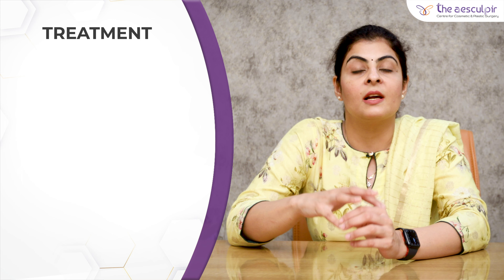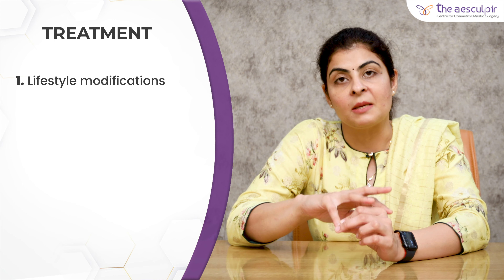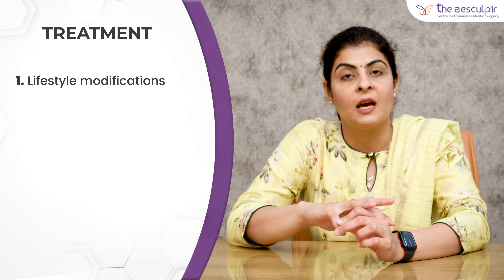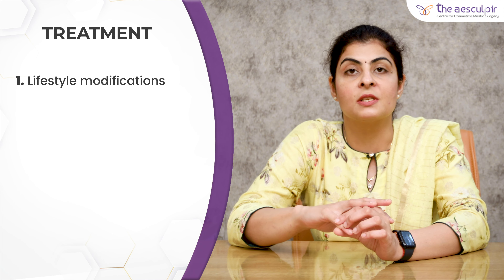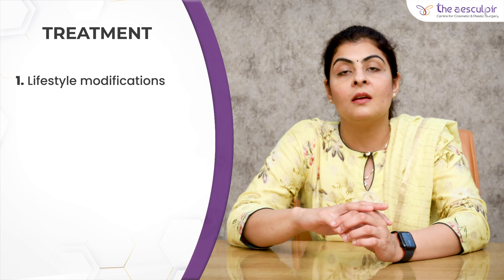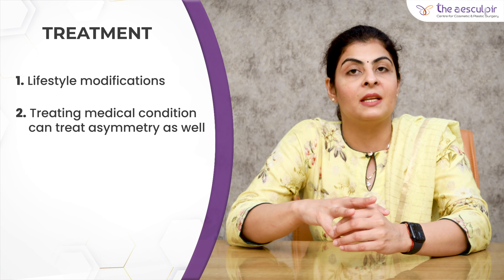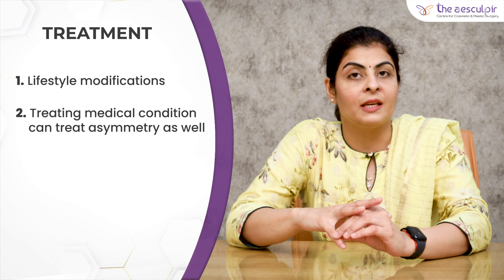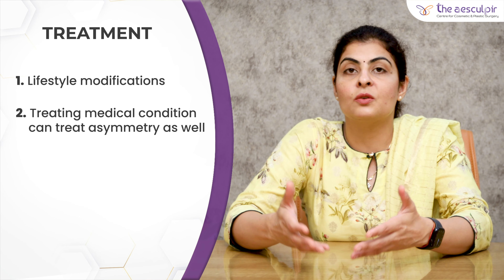First is lifestyle modification. You can modify your sleeping habits and your way of expressing yourself to some extent, so that asymmetries that were very noticeable become less noticeable over time. Then, if there is a medical condition like Bell's palsy or stroke — paralysis — if that is medically treated, most of these asymmetries can be corrected to some extent.